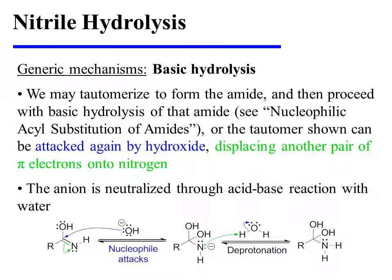There are two ways to proceed forward mechanistically. One option is that we may tautomerize to form the amide and then proceed with basic hydrolysis of that amide. For the mechanism for that process, see the video on the nucleophilic acyl substitution of amides.